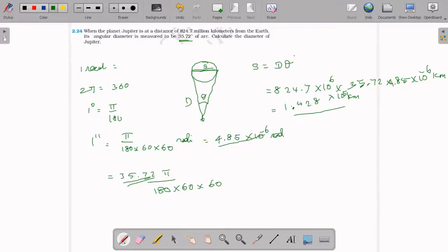The distance of Jupiter from the Earth is given data. Angular diameter is called angular diameter. Then diameter of Jupiter.